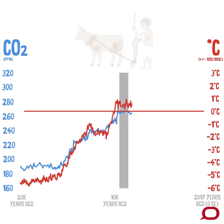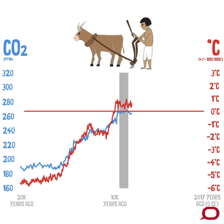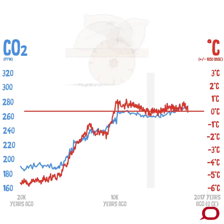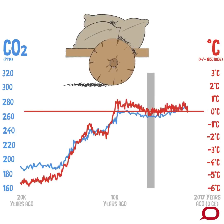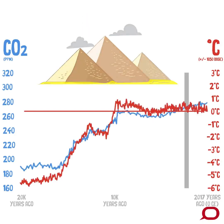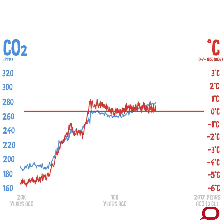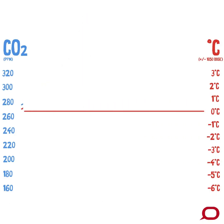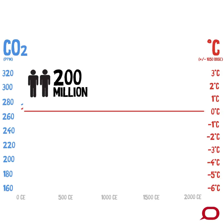There's the birth of modern agriculture, and the wheel, and the pyramids in Egypt. And now we hit the common era, the year 0 CE. At this point, the world population is just 200 million people.